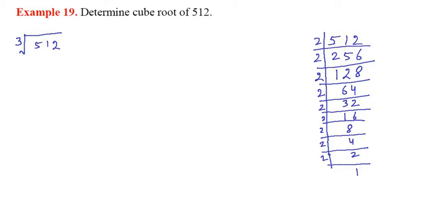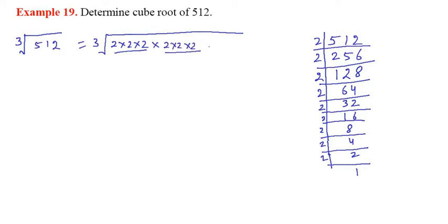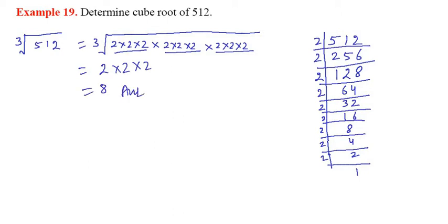So you have to write the cube root of this one. It is 2 × 2 × 2 — that's the first triplet — and 2 × 2 × 2 — that's the second triplet — and 2 × 2 × 2 — that's the third triplet. You can see here it is 9. We get three triplets of 2. So 2 × 2 × 2 = 8, and 8 is the answer of the cube root of 512.